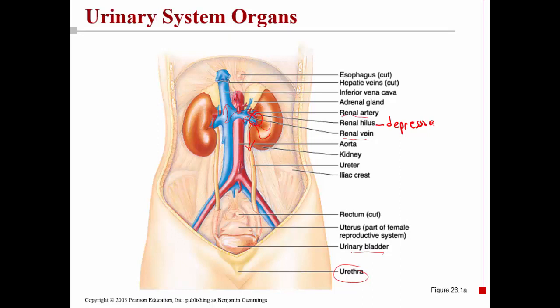Where the artery and the vein enter the kidney there is a depression, and this is called the renal hilus. On top of the kidneys are the adrenal glands. Remember that in the cat, the adrenal glands were more medial.